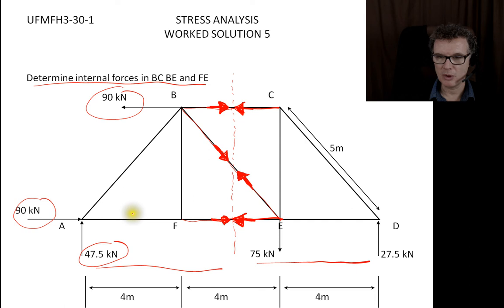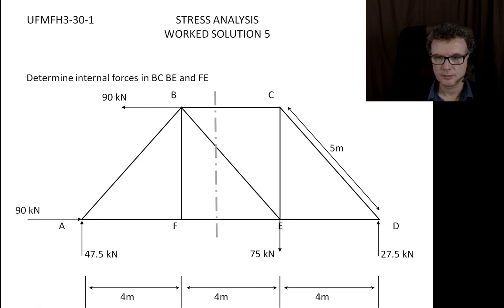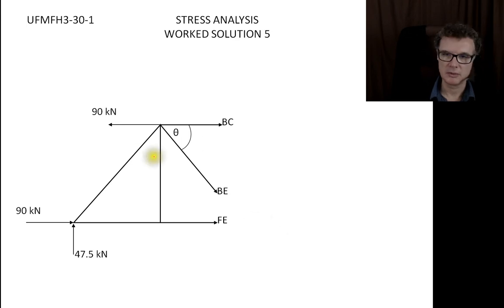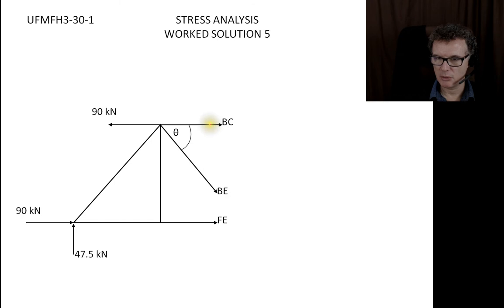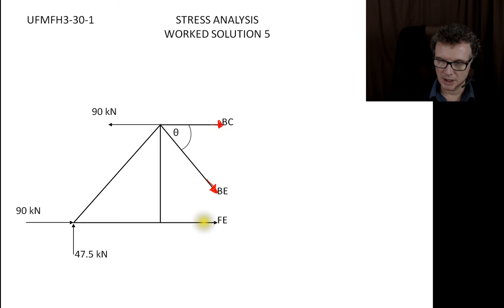We need to get rid of one section. I'm going to make the cuts and I've decided to get rid of the right-hand section, keeping the left. Having made my cut through the members, I can label those members as if their forces are pointing down the member — that's the BC one, the BE one, and the FE one.